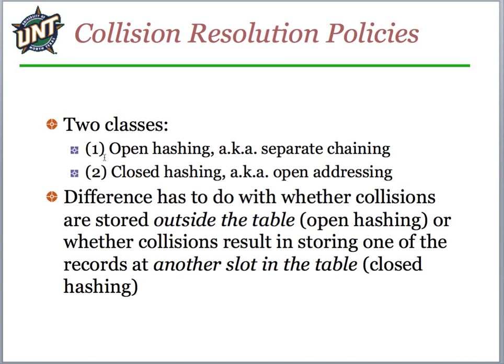There are two classes of collision resolution policies. Open hashing means we chain things — if something occurs at the same location, we just build a linked list or chain of those values at that location, then search through the chain to find what we're looking for. Closed hashing means we go put it in a different location — a secondary lookup — using some secondary hashing function. The question is: do we store the values outside the table (open hashing) or store them at another slot in the table (closed hashing)?